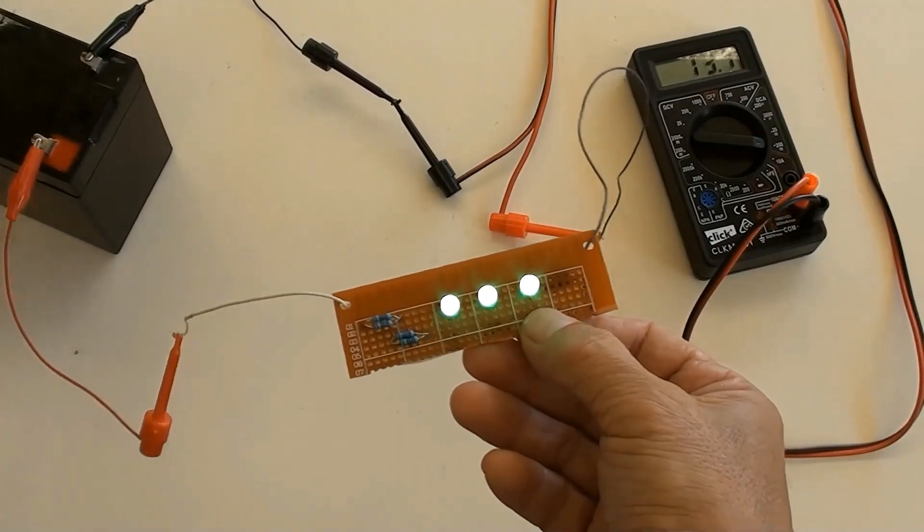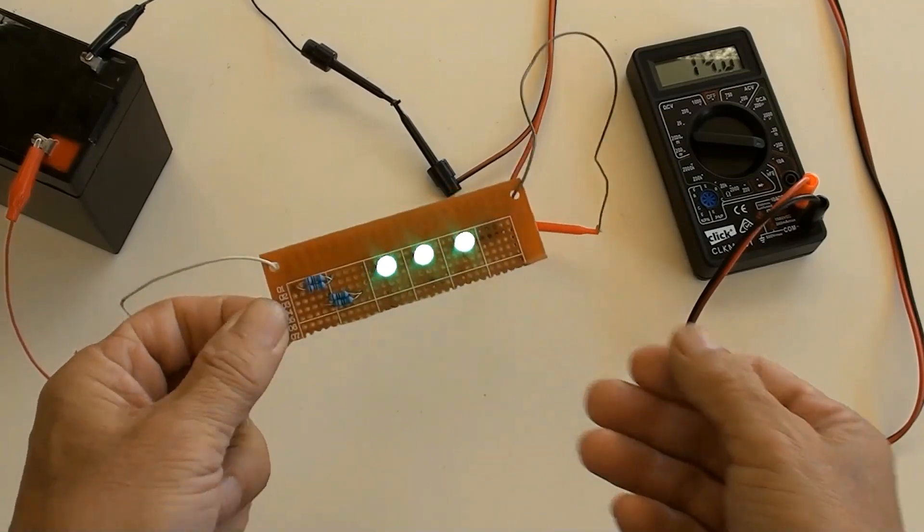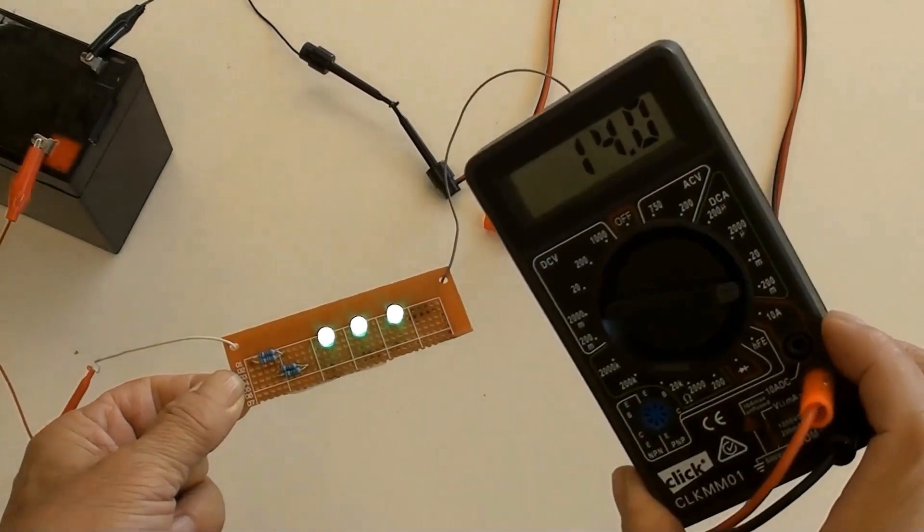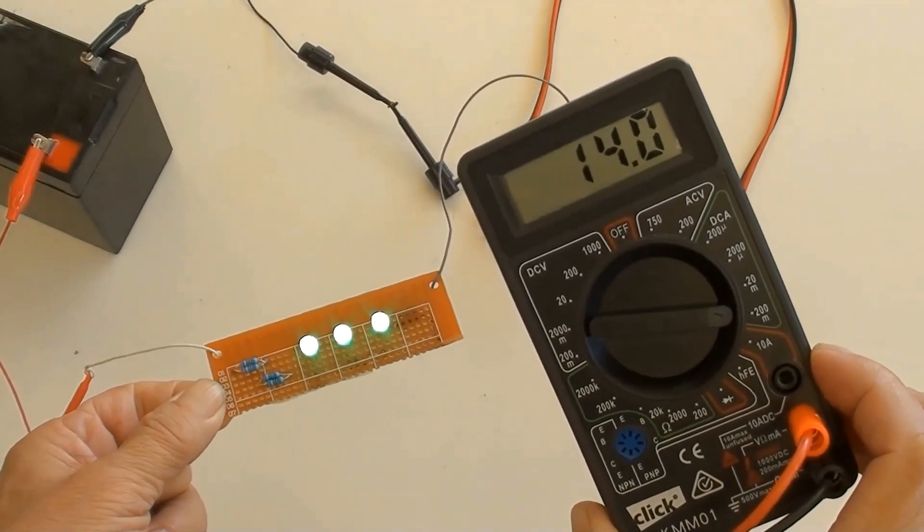Connect the battery, the LEDs lit, and the circuit's current is 14 milliamperes.